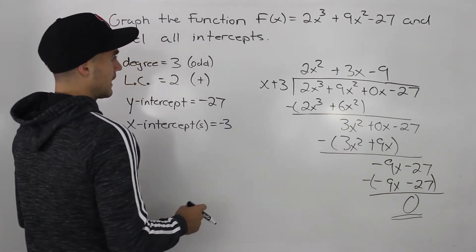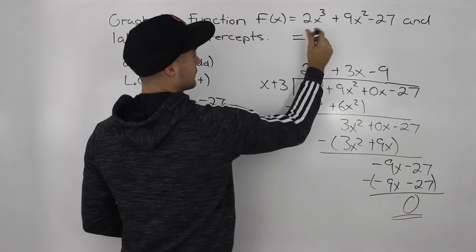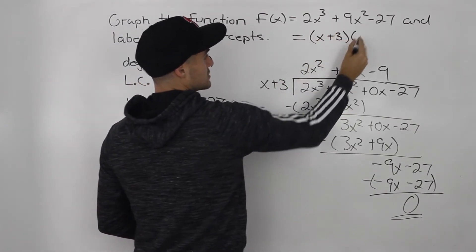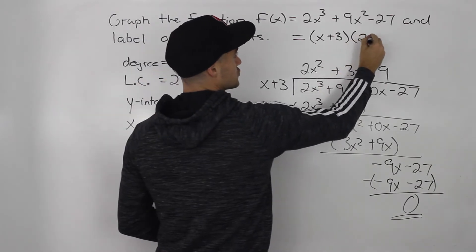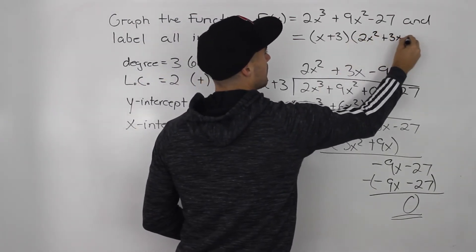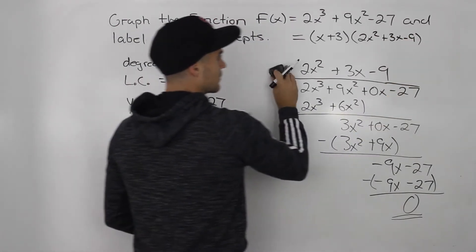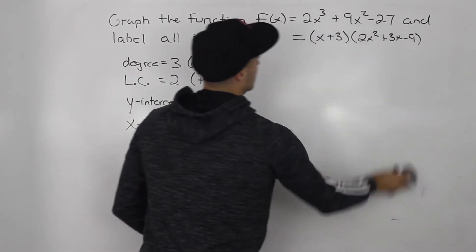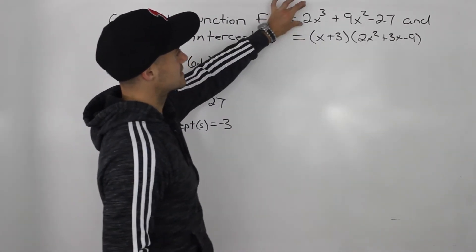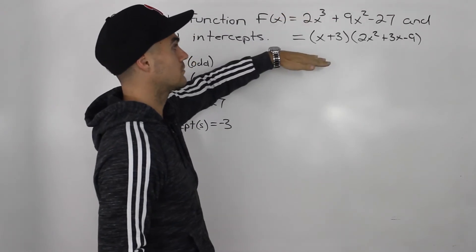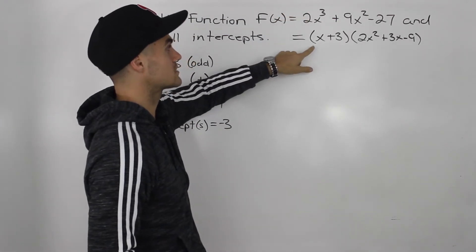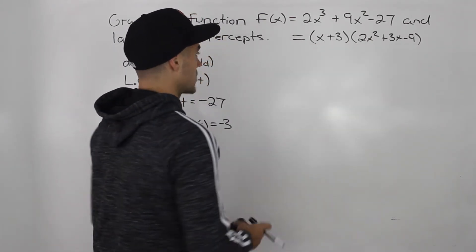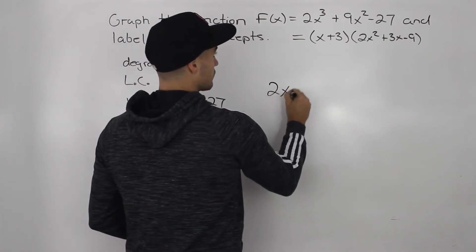So what we can do at this point is we can take this function and we can break it down into that factor we found x + 3 and this quotient here, 2x² + 3x - 9. So notice how we're taking this expanded polynomial and we are slowly breaking it down. We are factoring it. We factored it into x + 3 and then this quadratic here. And then this quadratic, we just have to factor it now.